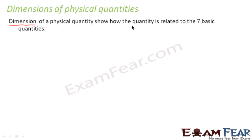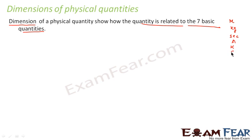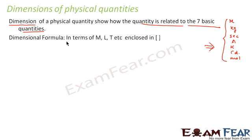What is dimension? The dimension of a physical quantity shows how the quantity is related to the seven basic quantities. There are two kinds of physical quantities: basic quantities and derived quantities. The basic quantities have units: metre, kilogram, second, ampere, kelvin, candela, and mole. The dimension of any physical quantity shows how it is derived from these basic units.